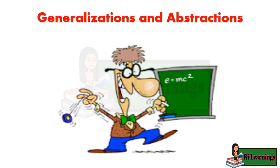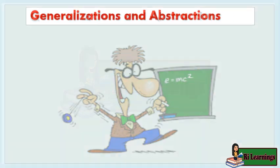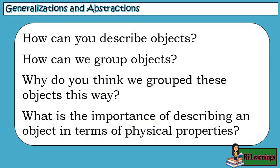Generalizations and abstractions: How can you describe objects? How can we group objects? Why do you think we grouped these objects this way? What is the importance of describing an object in terms of physical properties?